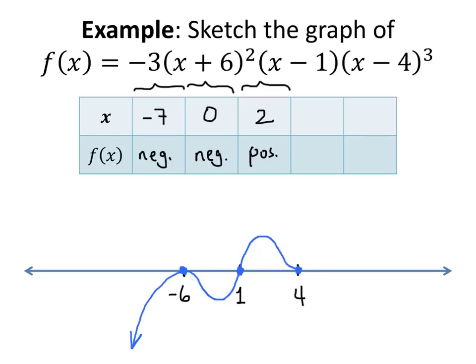Now, notice again that I drew this as just crossing through the axis, and that's because this root appears with multiplicity 1, and that means that it looks like y equals x there. It looks like a straight line.